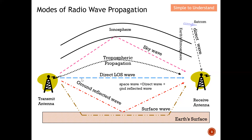Next is the ground reflected wave, which is quite similar to sky wave, but the reflection mechanism is from the earth — the electromagnetic wave hits the ground and reflects back to the receiver antenna. Finally, for today's focus: the surface wave, where the electromagnetic wave propagates along the earth's surface, with the earth surface acting as the medium to carry the wave from transmitter to receiver.